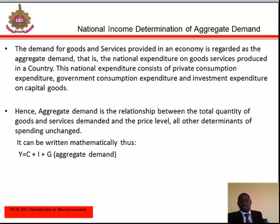All other determinants of spending are held constant. It can be written in mathematical terms as Y equals C plus I plus G — that is, aggregate demand. When the economy is in equilibrium, the aggregate demand must be equal to the aggregate supply of goods and services. When this happens, aggregate supply of final goods and services will be equal to the national income.